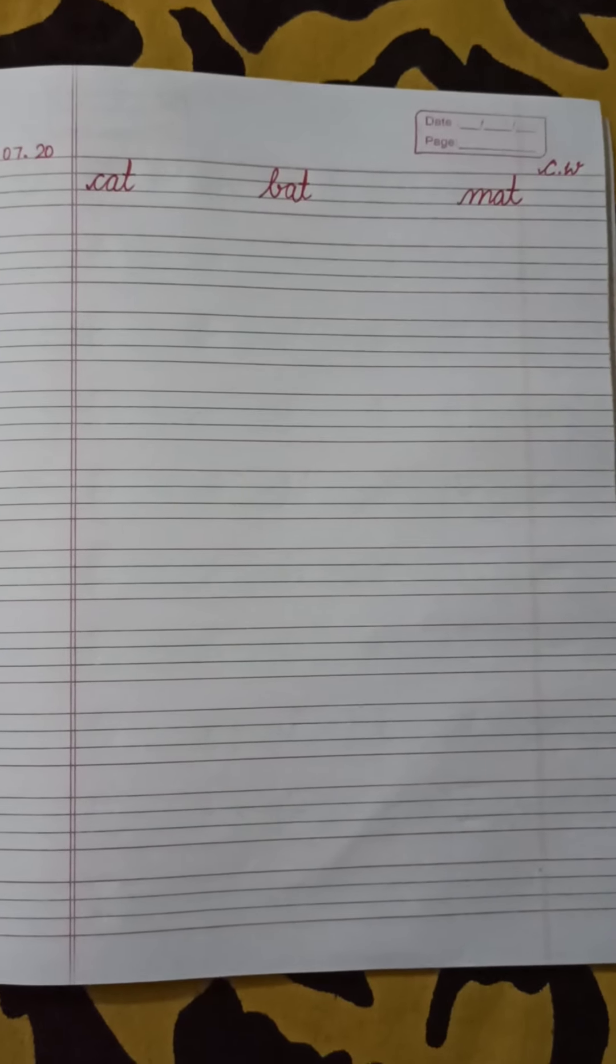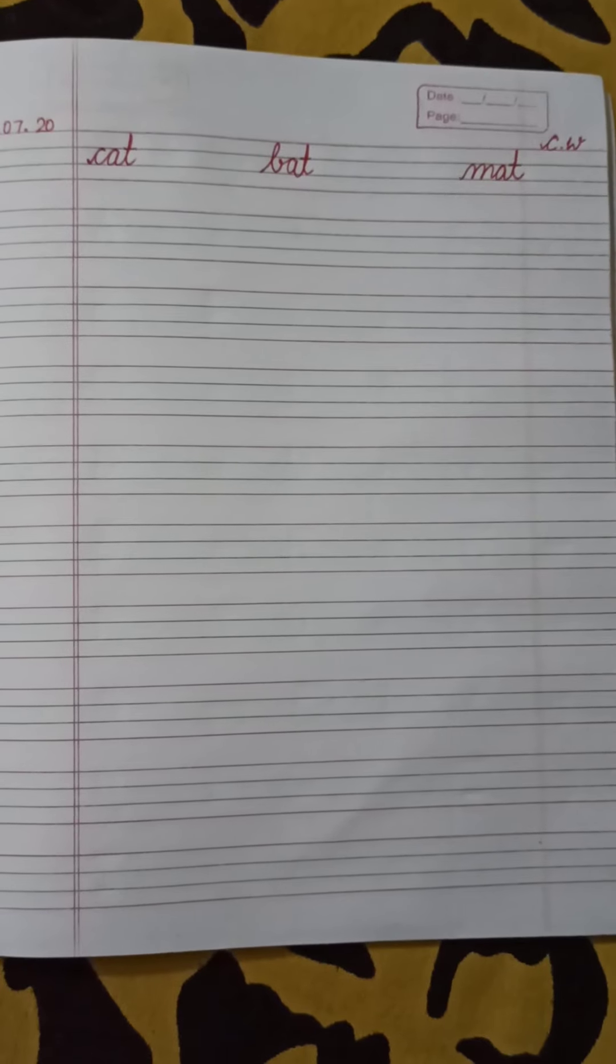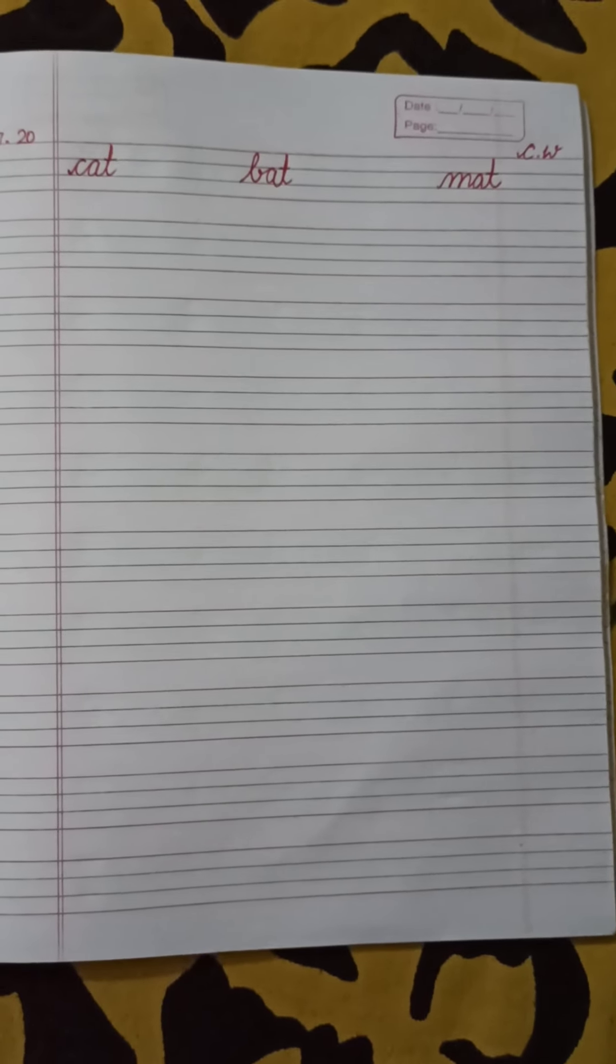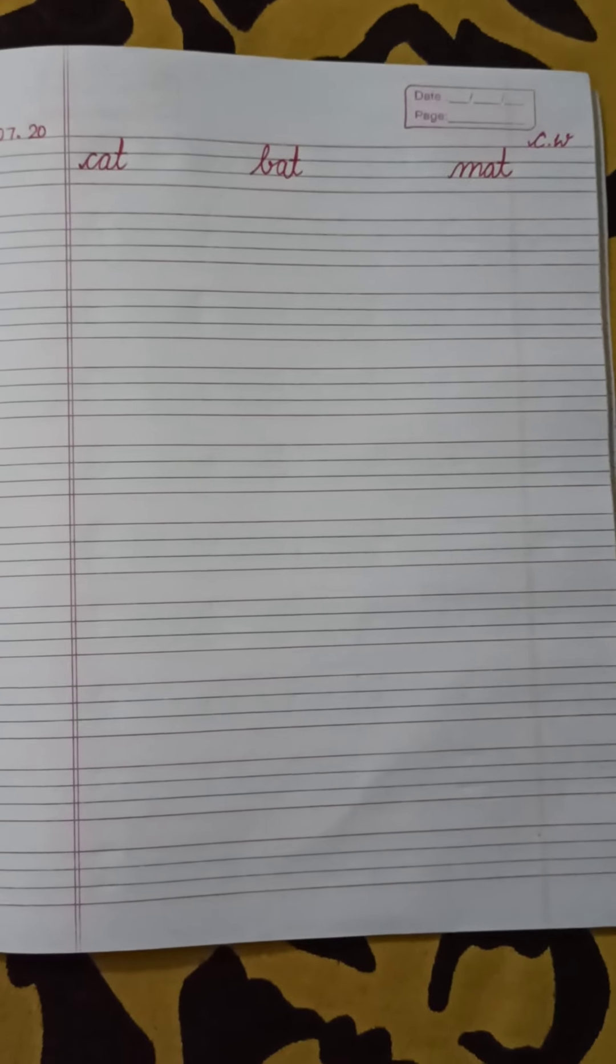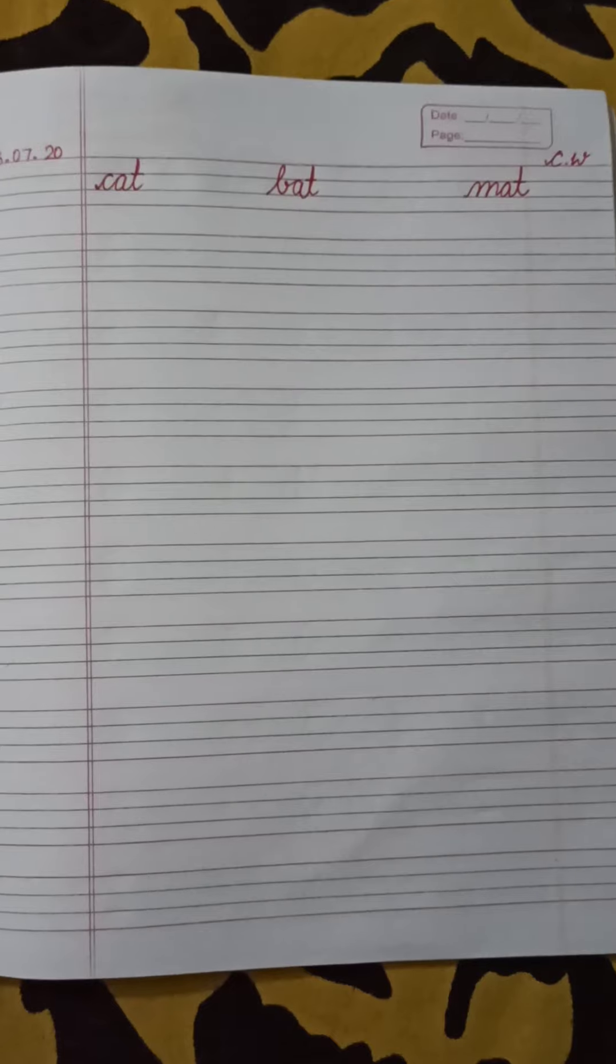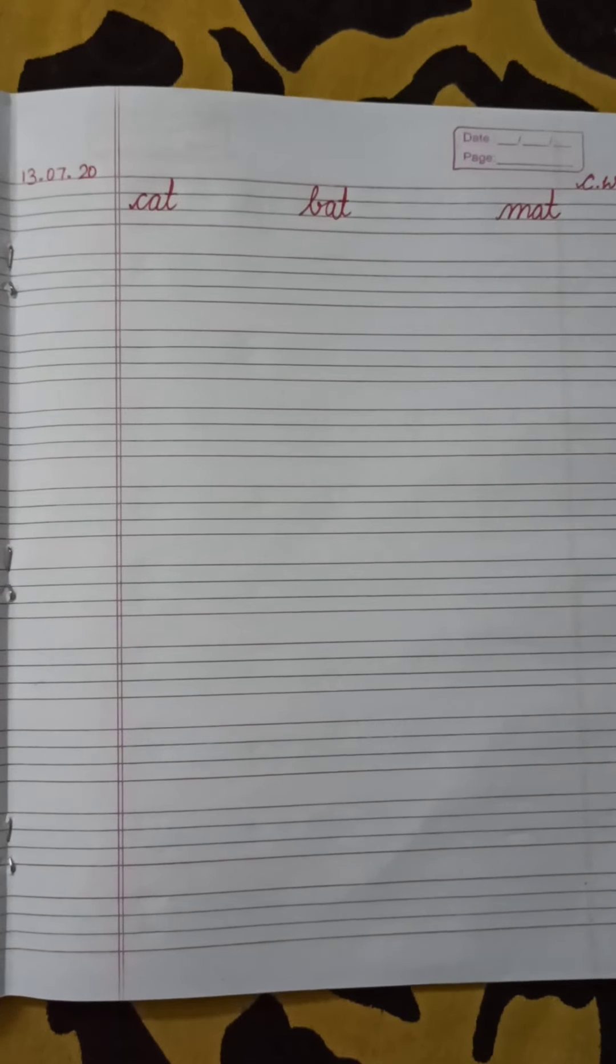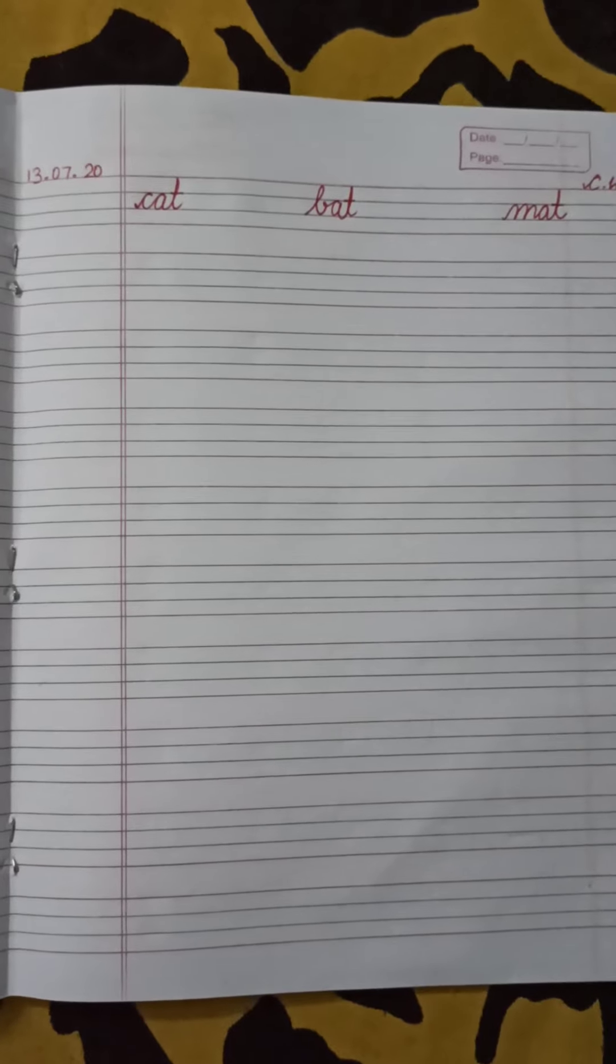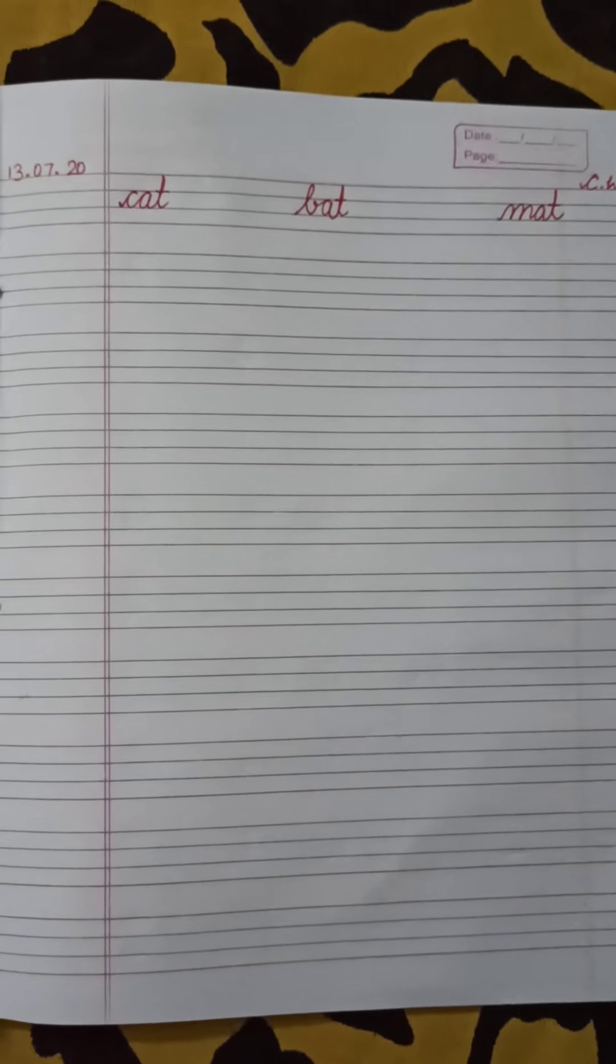Good morning my dear children. Till now we have learned joining of two letter words. Today we are going to learn joining of three letter words with the help of A sound. So joining of three letter words means three letters or three alphabets ko join karke likhna. So let's start.